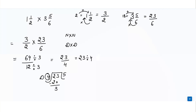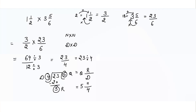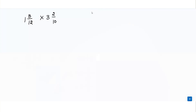This is the divisor, this is the quotient, and this is the remainder. We write it as: quotient, then remainder over divisor. The divisor is 4, the quotient is 5, and the remainder is 3. So the answer for this question is 5 and 3/4.